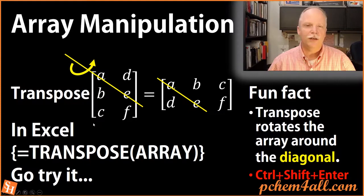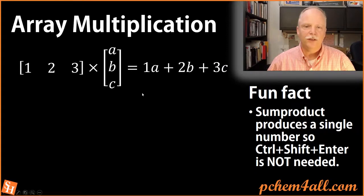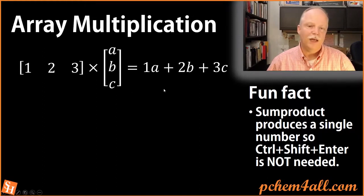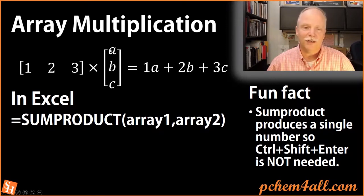That's array manipulation — in particular the transpose function. Now let's look at how we can multiply arrays. Taking a row times a column, I take the row 1, 2, 3 and multiply by the column A, B, C, and add them together: one times A plus two times B plus three times C. You get a single number. The fast way to do this is called SUMPRODUCT — the sum of the product of two arrays.